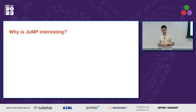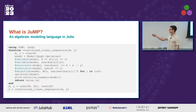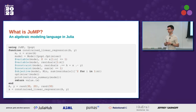What makes JuMP interesting? Nice syntax. Because we're in Julia, we get to use macros, which lets us — the @variable, @constraint, @objective macros — play around with the syntax and let you write something a bit more mathematical than you would if you were just writing plain code. That's a feature of Julia.